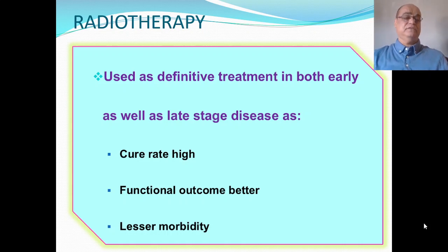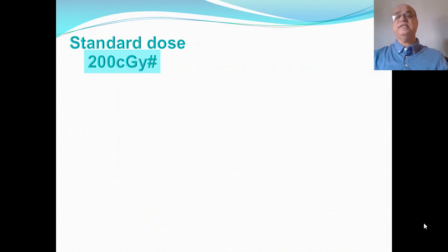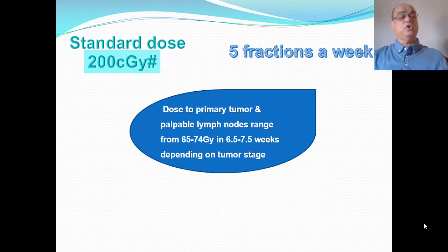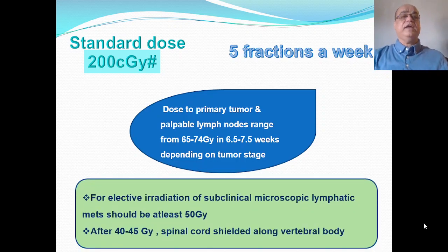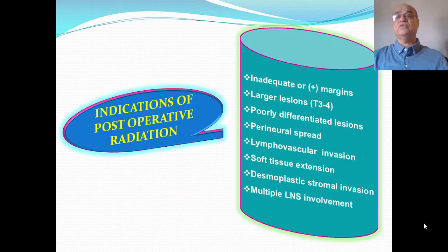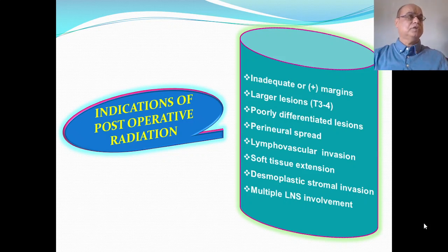The standard dose is 200 centigray with five fractions per week. Dose to the primary tumor and palpable lymph nodes ranges from 65 to 74 Gray in 6.5 to 7.5 weeks depending upon the tumor stage. For elective irradiation of subclinical microscopic lymphatic metastasis, the dose should be at least 50 Gray, and after 40 to 45 Gray the spinal cord should be shielded along the vertebral body.